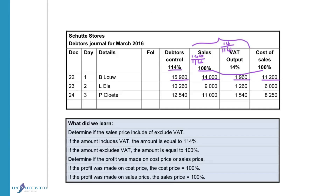In this entry, the sales price excluding VAT was provided as 9,000. To calculate the debtors figure (total): 114 divided by 100 times 9,000 gives 10,260. To calculate the VAT: 14 divided by 100 times 9,000 gives 1,260. The cost of sales is 6,000.